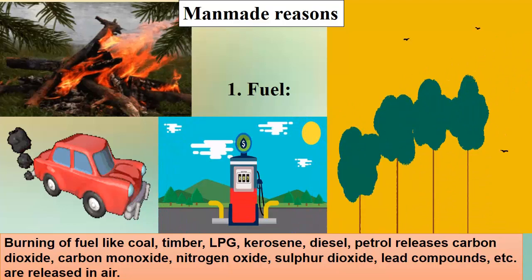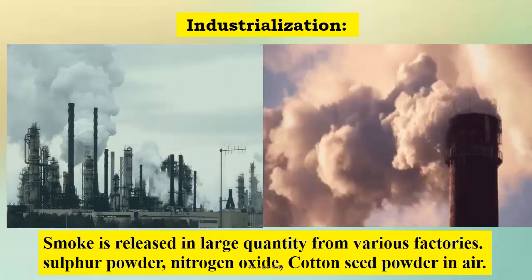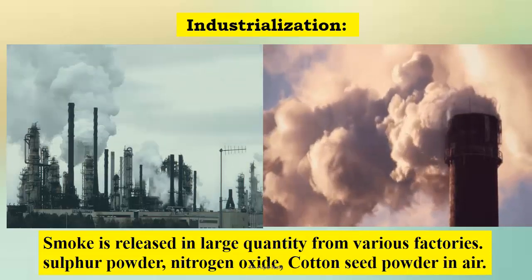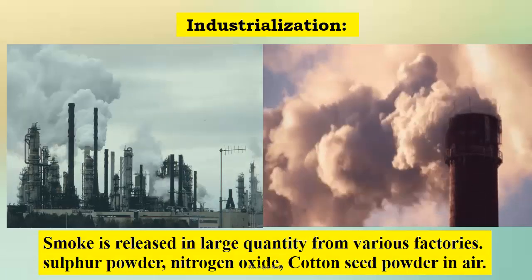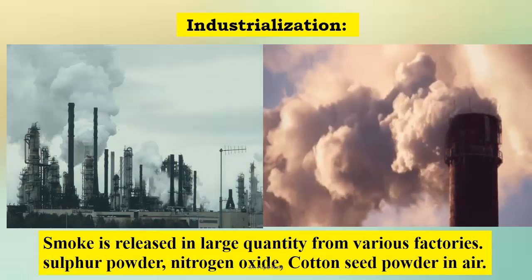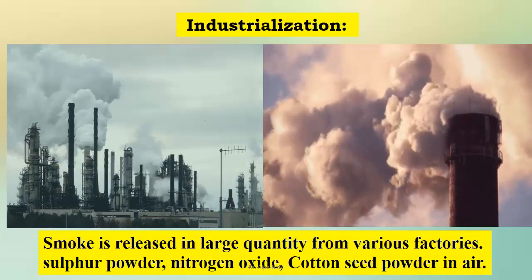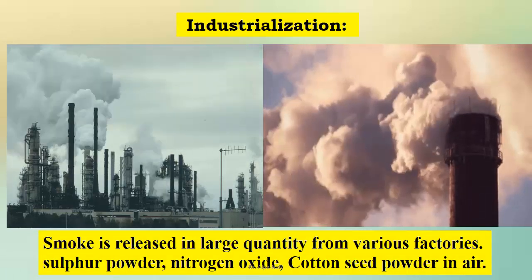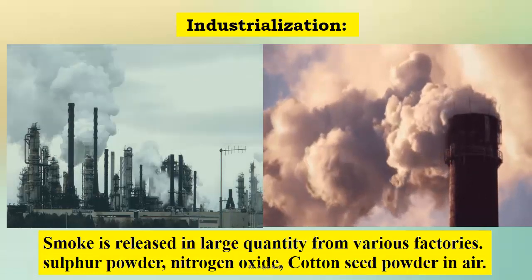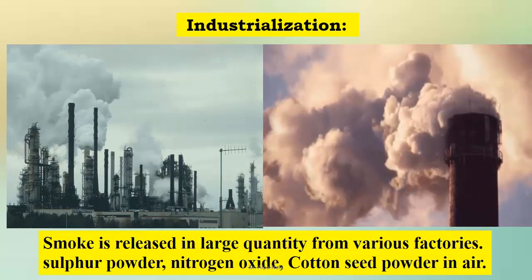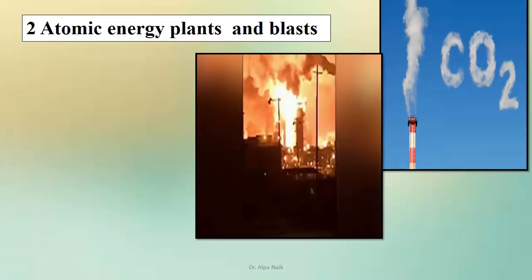The more we use these fuels, the more we add to air pollution. The second cause is industrialization. Chemical industries, petrochemicals, cotton mills, foundries and paper mills cause significant air pollution. Dust generated by cement and stone industries, and smoke released in large quantities from factories — as a result, sulfur dioxide and nitrogen oxide all get mixed up.